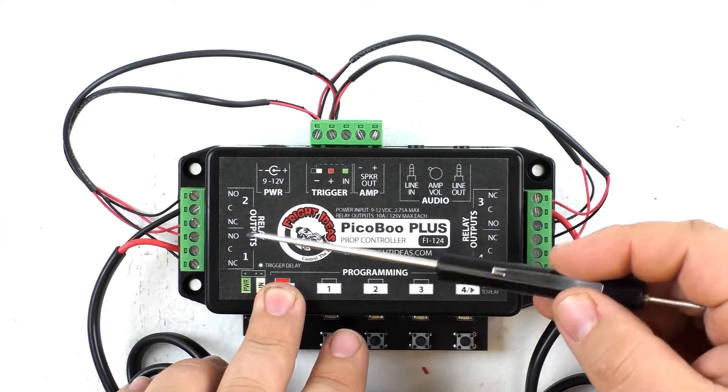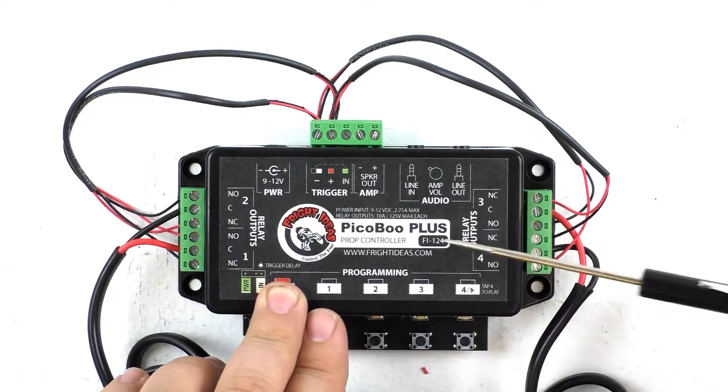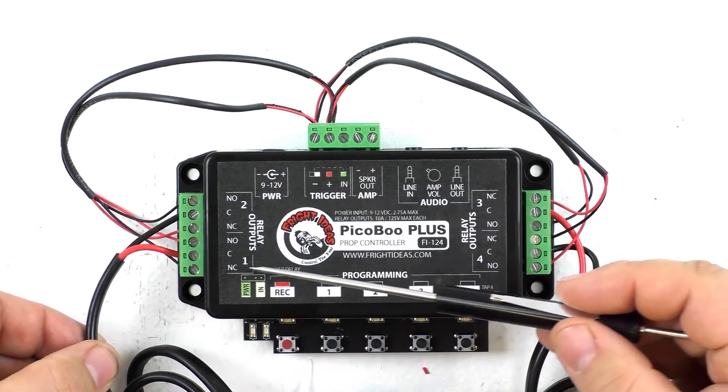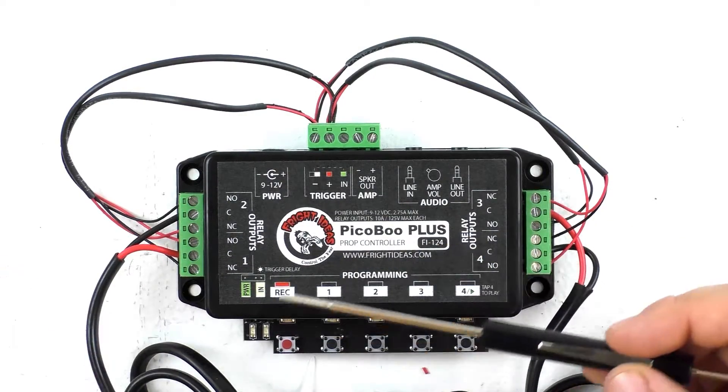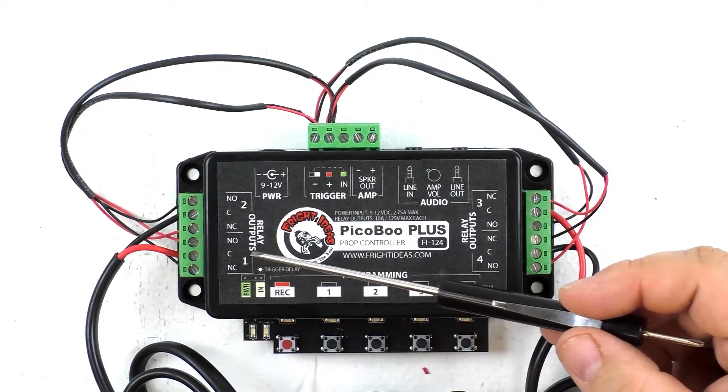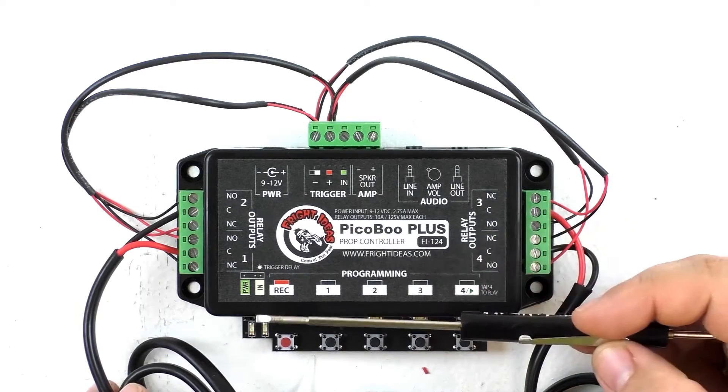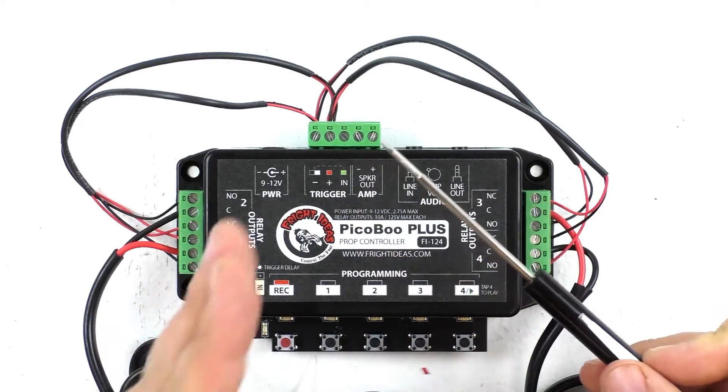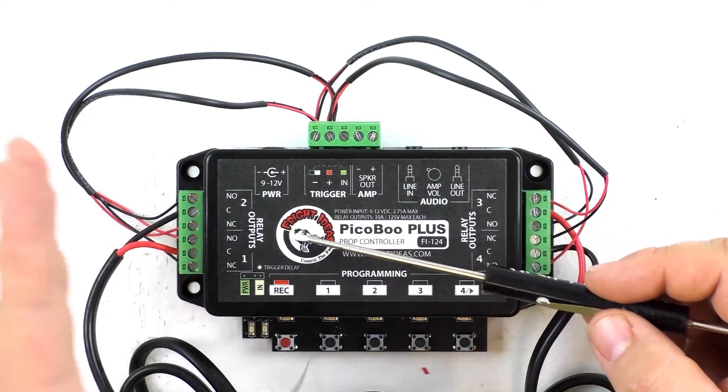So with negative and positive power going to either NO or NC of each of the four relays, we then have connected the actual linear actuator powers to the common inputs of all the different relays. So for the first linear actuator we have positive going to common for 1 and negative going to common for 2. That means when we activate relay output 1, the first linear actuator is going to extend. And when we activate relay output 2, it's going to retract.